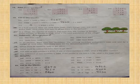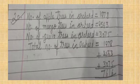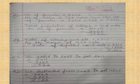Question twenty: In a fruit orchard there are one thousand nine hundred seventy-eight apple trees, two thousand five hundred sixty-three mango trees, and three thousand and seventy-five guava trees. How many fruit trees are there in all? Write the steps like this: number of apple trees equals one thousand nine hundred seventy-eight, write the number of mango trees and guava trees, then add all the numbers. The answer is seven thousand six hundred and sixteen.